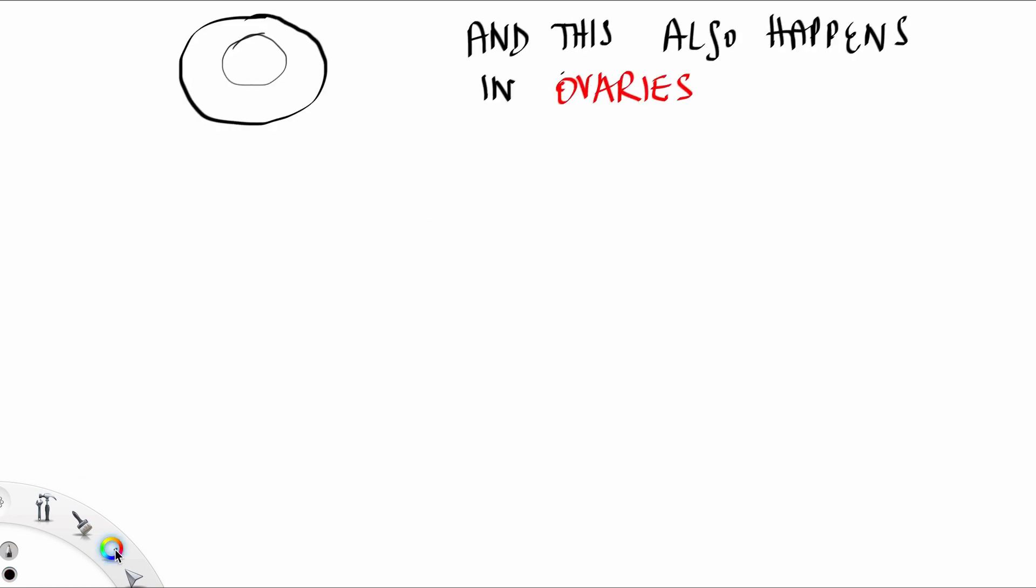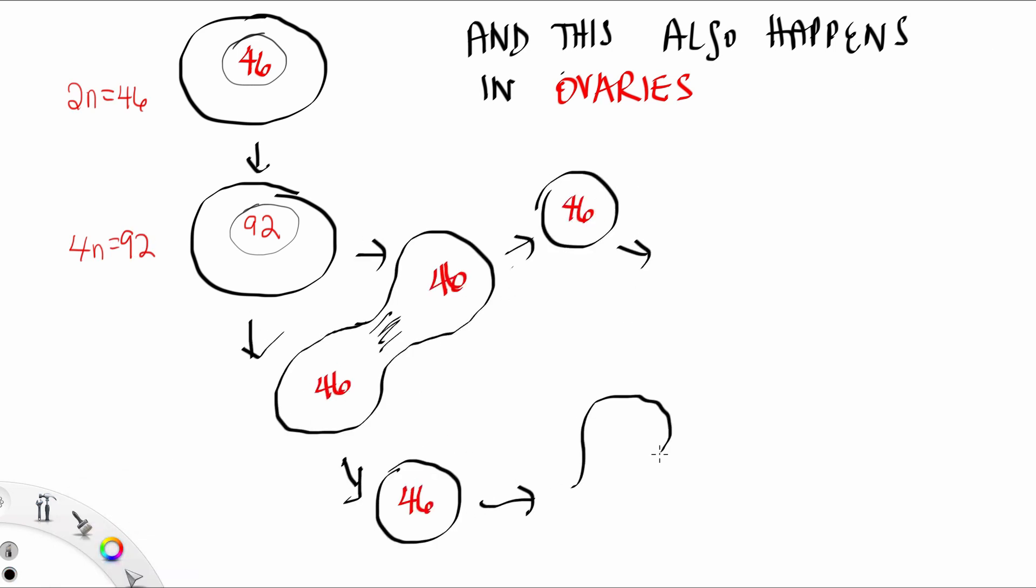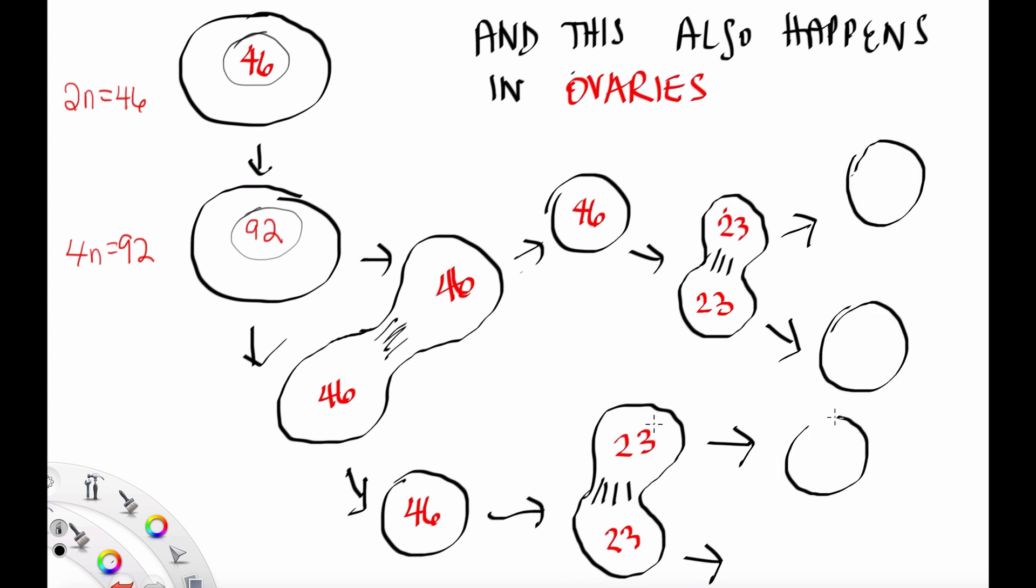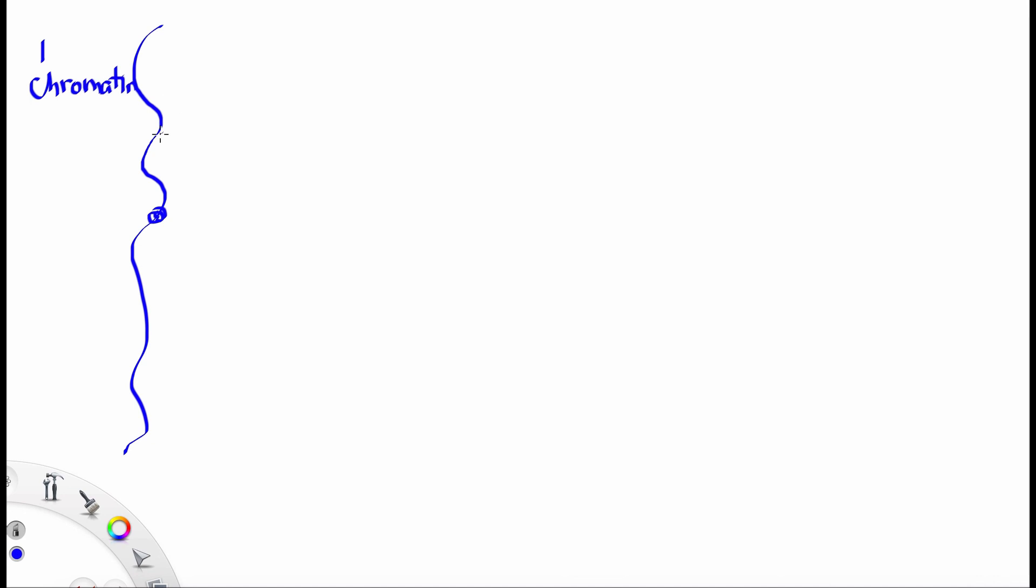This also happens in ovaries, where once again we do DNA replication, and then we also divide twice inside these ovaries. And you can make four haploid cells, which are destined to become the eggs.